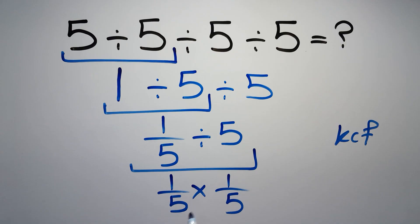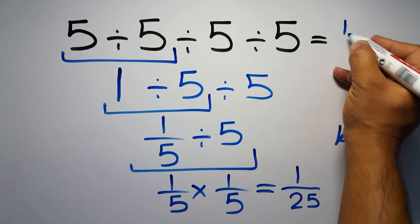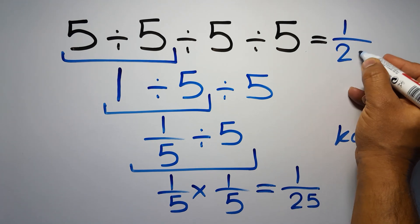So we have 1 over 5 times 1 over 5, which equals 1 over 5 times 5 gives us 25. 1 over 25, and this is our final answer to this problem.